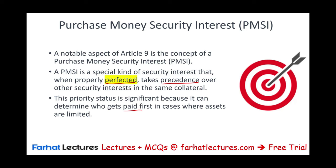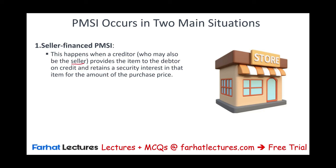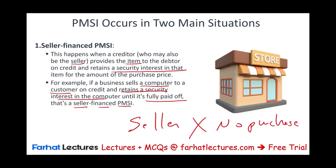PMSI occurs in two main situations. The first is seller-financed PMSI. This happens when a creditor — who is also the seller — provides an item to the debtor on credit and retains a security interest in that item for the purchase amount. For example, a business sells a computer to a customer and retains a security interest in the computer until it's fully paid. Without the seller, there is no purchase, so the seller has the right to that property before anyone else.